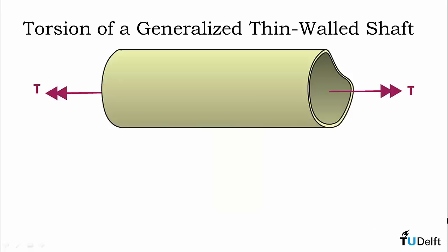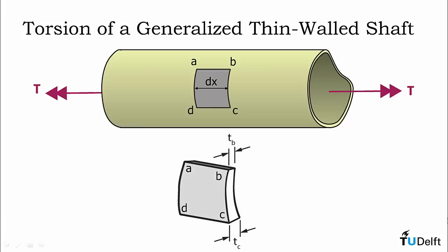If we take a closer look at our generalized shaft we can analyze a rectangular element passing through the entire thickness of the shaft wall. In this shaft the thickness can vary along the perimeter but it is constant along the length of the shaft due to the constant cross-section.